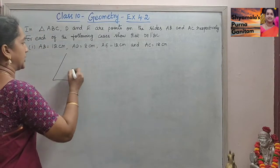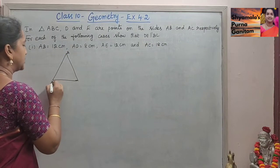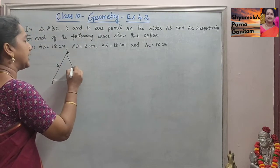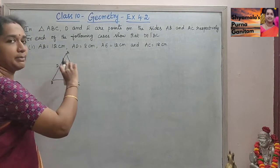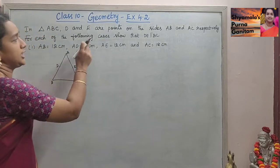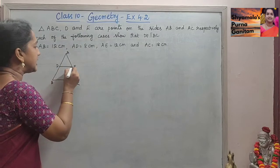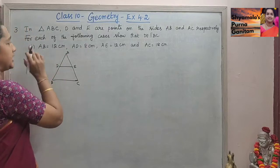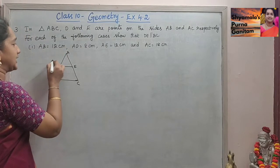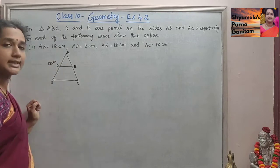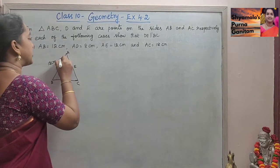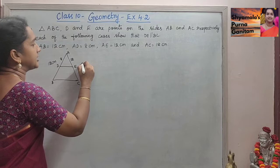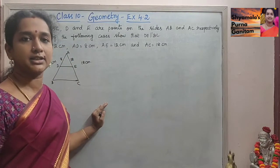In triangle ABC, D and E are the points on the sides AB and AC respectively. For each of the following cases, show that DE is parallel to BC. The information given is AB is equal to 12 cm, AD is given as 8 cm, AE is given as 12 cm, and AC is given as 18 cm. This is what we are asked to prove.